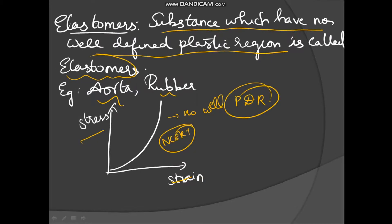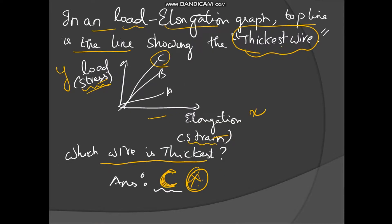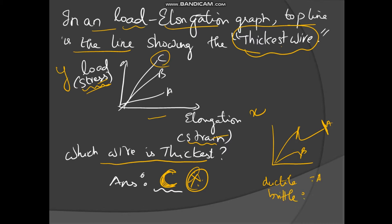Consider another example with wire A and wire B. For wire A, the plastic deformation region is large; for wire B, there is no plastic deformation region. So wire A is more ductile. Wire B, which has a very small plastic deformation region, is more brittle. I hope you liked this lecture — please subscribe to Kishu's Neet Paar Sala. Thank you.